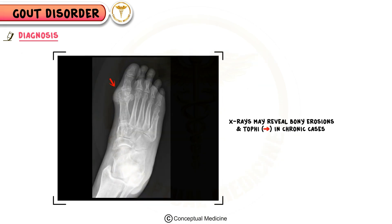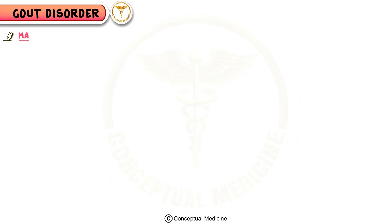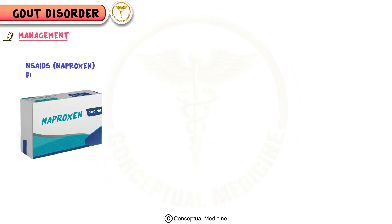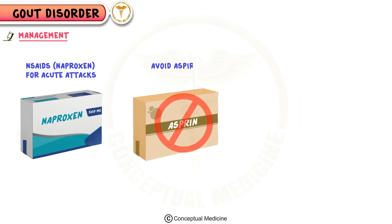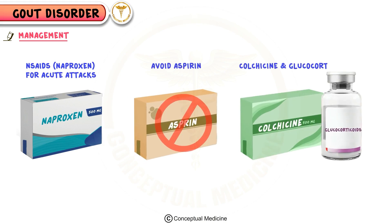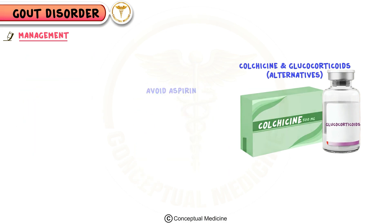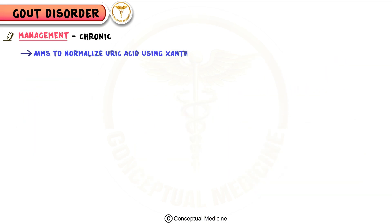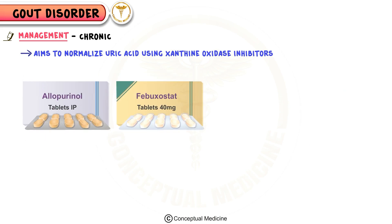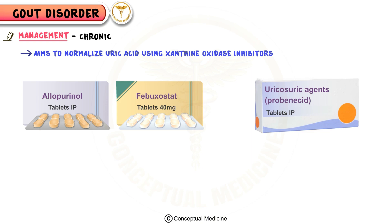Treatment includes NSAIDs like naproxen for acute attacks, avoiding aspirin; colchicine and glucocorticoids are alternatives. Chronic management aims to normalize uric acid using xanthine oxidase inhibitors like allopurinol or febuxostat, or uricosuric agents like probenecid, depending on uric acid excretion levels.